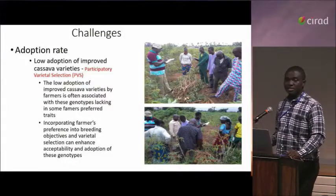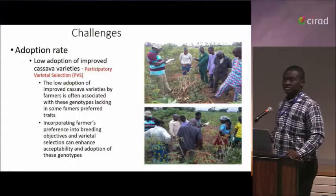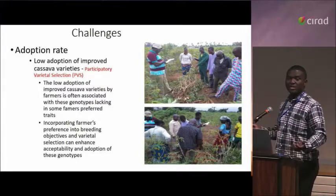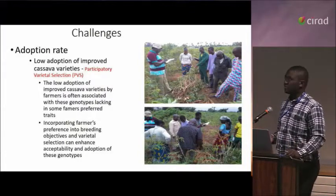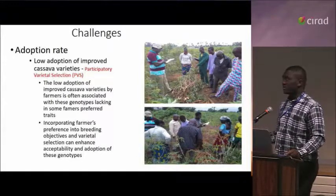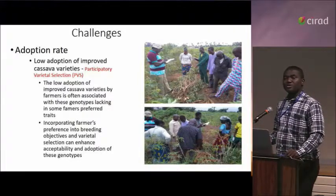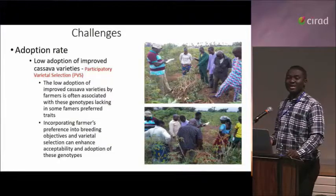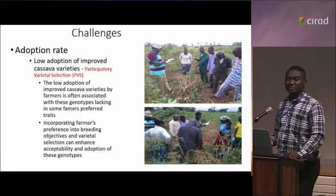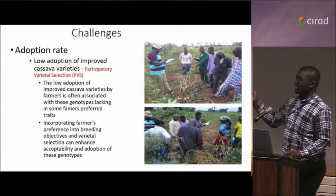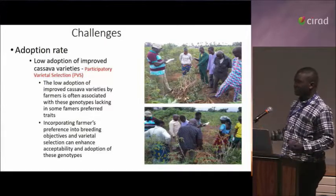Another challenge is adoption rate — you release a variety and then discover that the adoption rate of the improved variety is low. We think participatory varietal selection (PVS) will help combat this. With PVS, you start talking about farmer-participatory varietal selection, which are important things to think about.